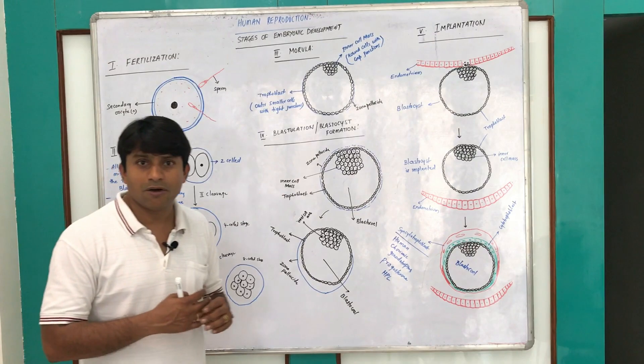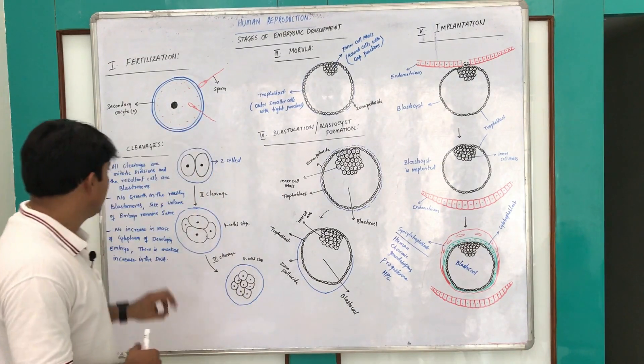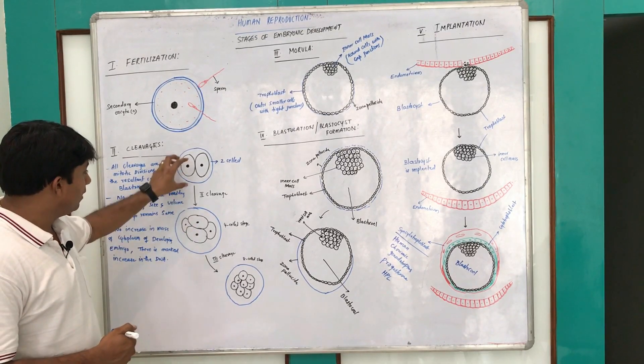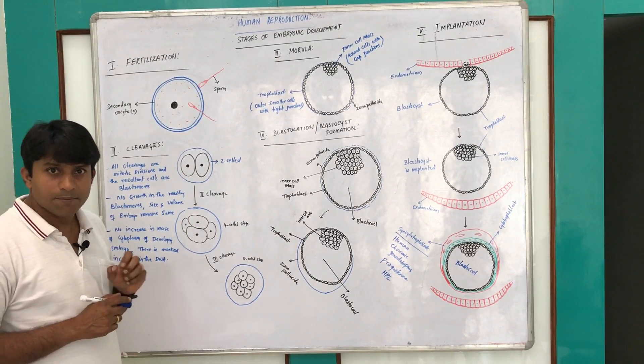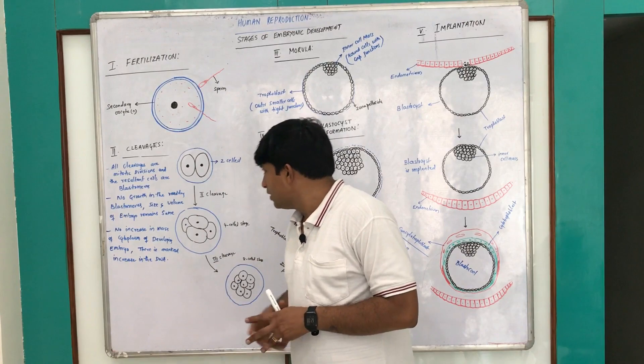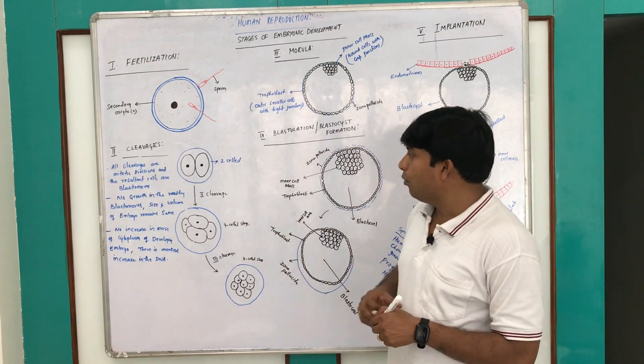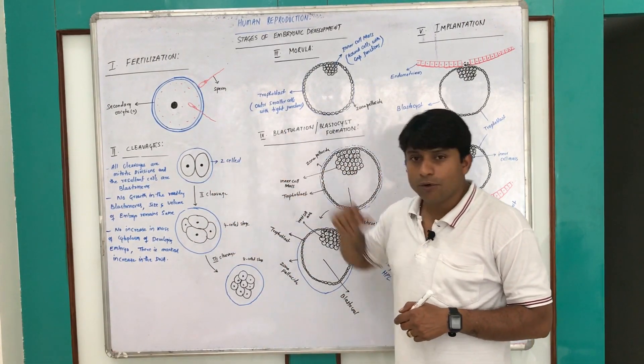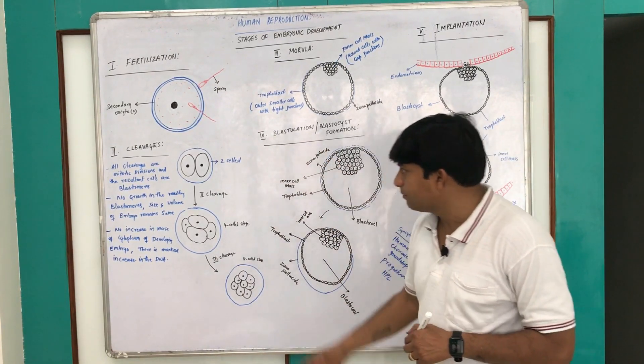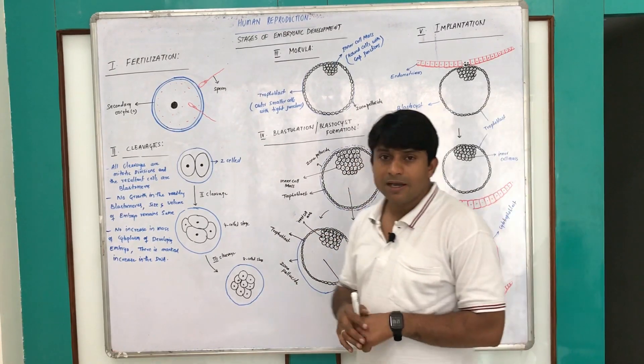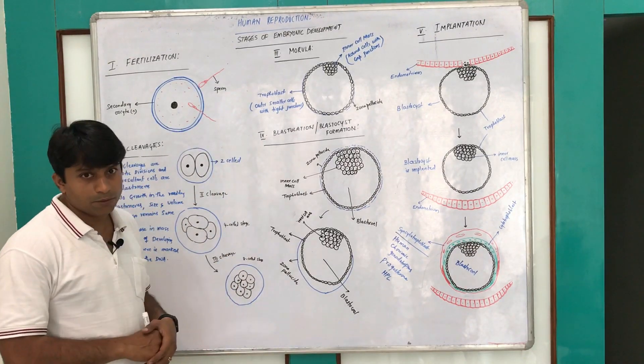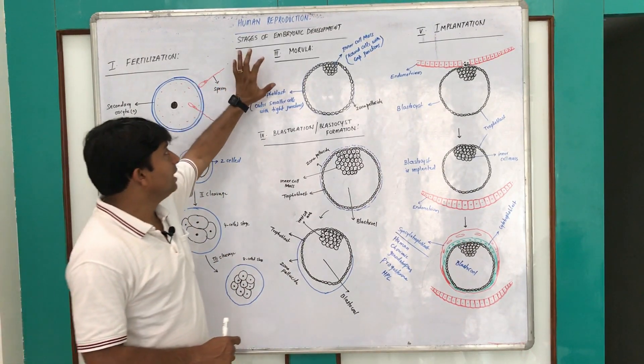After this, remaining all cleavage furrows are non-specific. During cleavage, all these divisions are mitotic divisions and the resultant cells are called blastomeres. There is no growth in the resulting blastomeres. The size and volume of the embryo remains the same during all cleavages, and there is no increase in the mass of the cytoplasm of the developing embryo, but there is a marked increase in the DNA of the developing embryo.